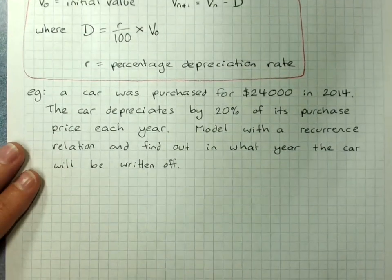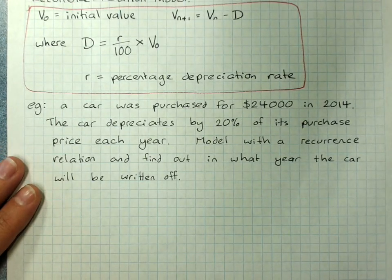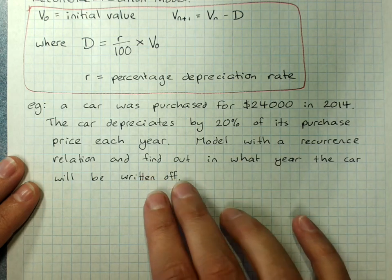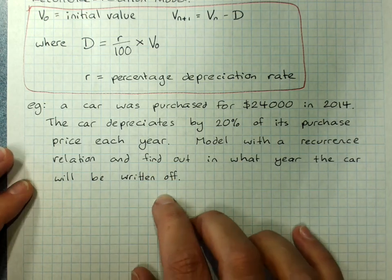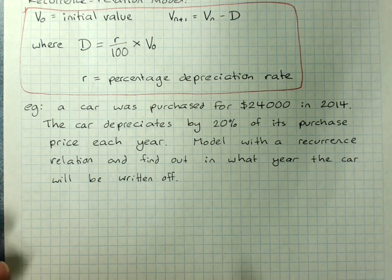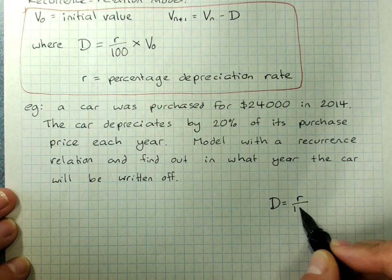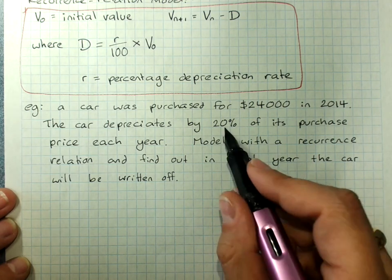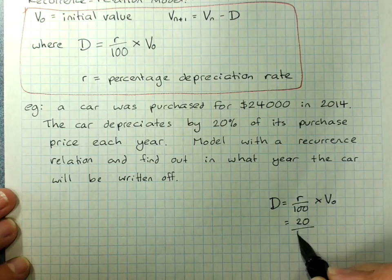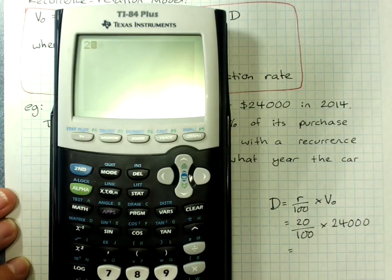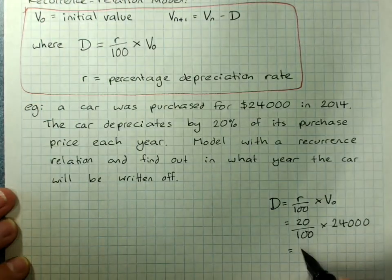For example, a car was purchased for $24,000 in 2014. The car depreciates by 20% of its purchase price each year. We need to model it with a recurrence relationship and find out in what year the car will be written off — that is, have a value of zero according to its depreciation schedule. D = R/100 × V0, where R = 20, so 20/100 × 24,000. That gives us $4,800 — we're losing $4,800 of value each year.